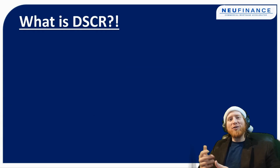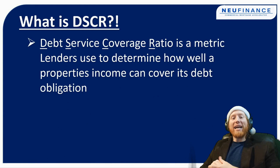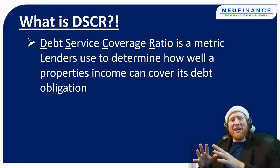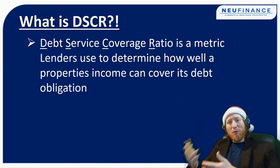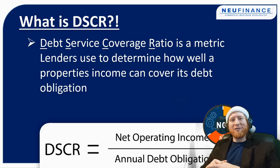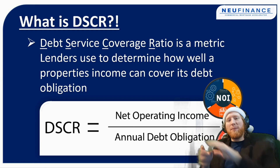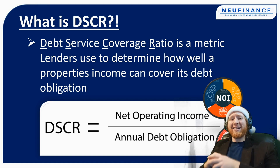So first things first, let's just do a quick definition of what DSCR is. DSCR stands for Debt Service Coverage Ratio. It's simply a metric that lenders use to determine how well a subject property can service the debt they're about to issue it. The equation for Debt Service Coverage Ratio is simply the net operating income divided by the annual debt obligation. You can also do it on a monthly basis — the monthly net operating income divided by the monthly debt obligation.